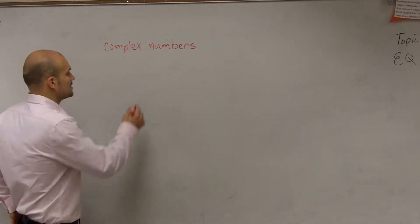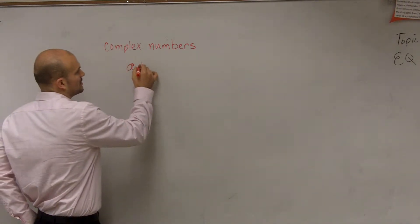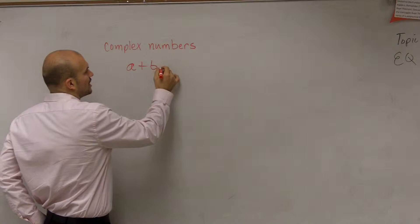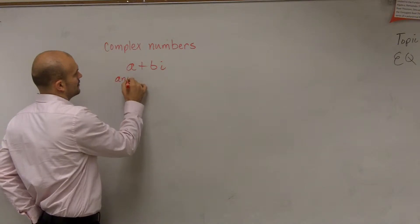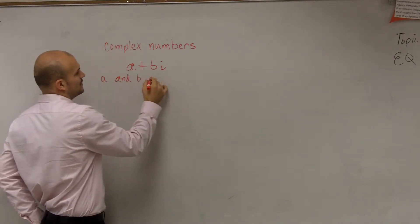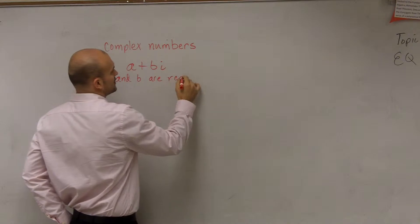The main important thing, ladies and gentlemen, we want to know about complex numbers is complex numbers come in the form of a plus b i, where a and b are real numbers.